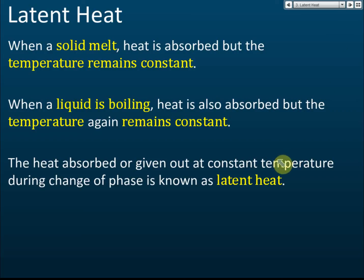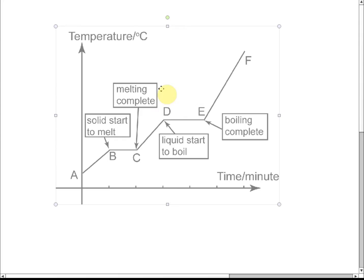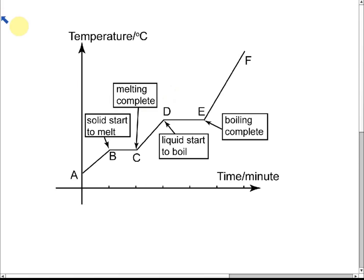Let's discuss latent heat, but first let's look at a heating curve and cooling curve. In chemistry, we learned that if you heat a solid, the temperature will increase. When the solid starts to melt, the temperature will remain unchanged until melting is complete, then the temperature increases again — at this point it becomes liquid.